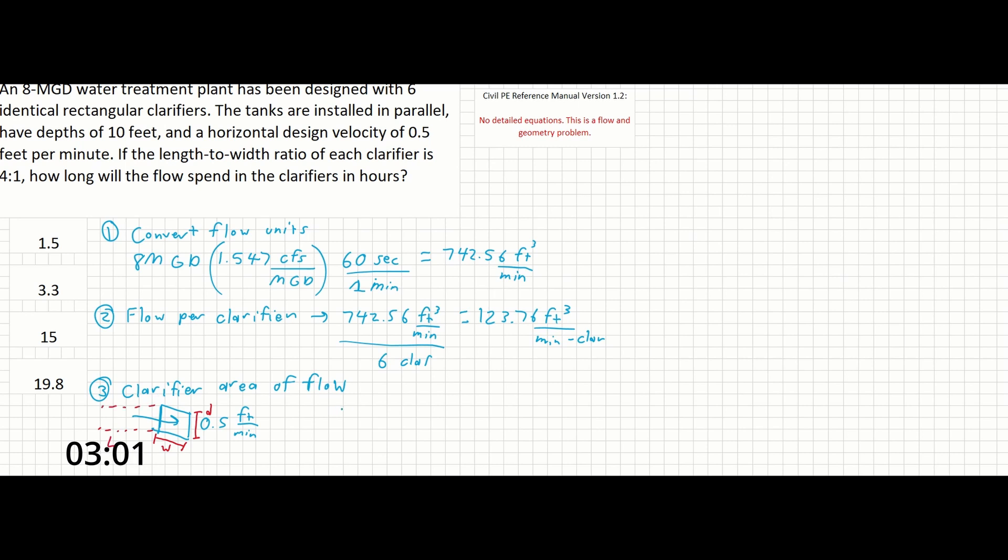We know what the flow is and we know what the velocity is. So using Q equals VA, we can calculate what the total area of flow should be. Rewriting this to A equals Q over V,